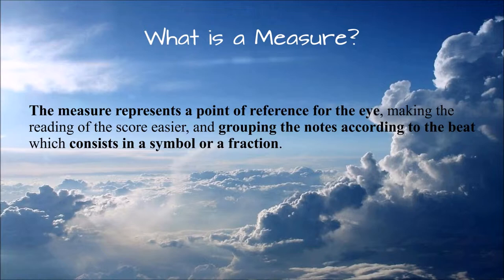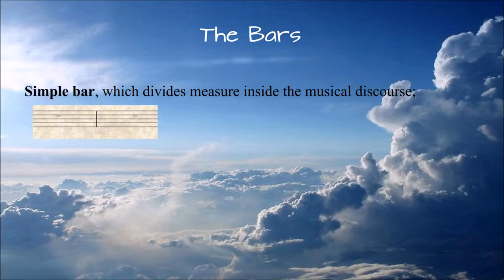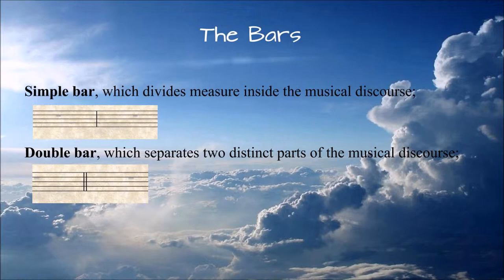The lines that delimit the measure can be of three types: simple bar, which divides measures inside the musical discourse; double bar, which separates two distinct parts of the musical discourse; and ending bar, which denotes the conclusion of the musical discourse.